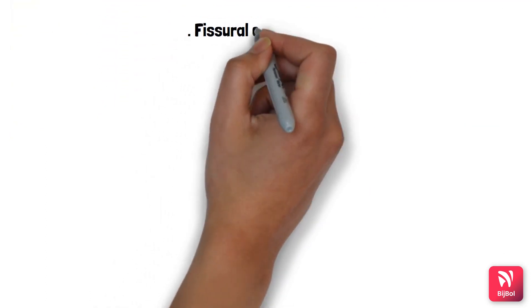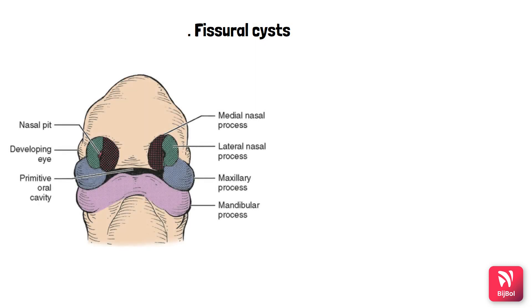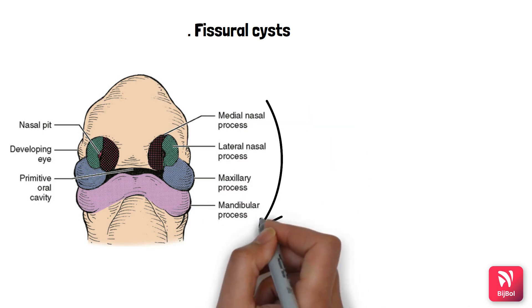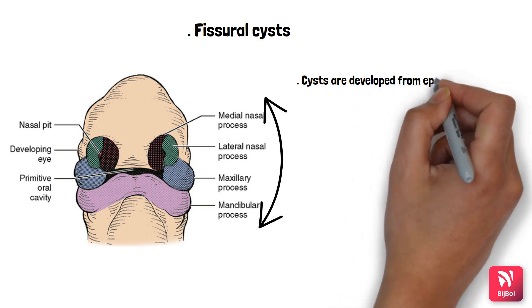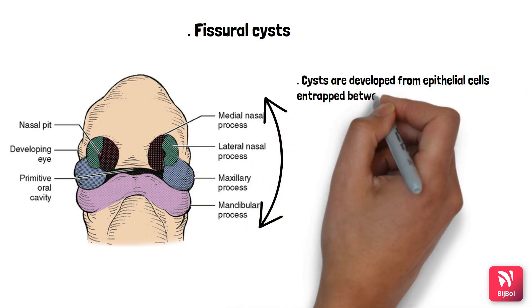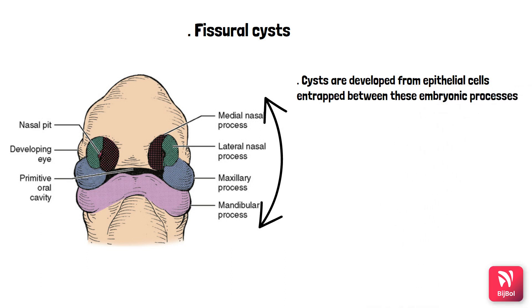These non-odontogenic cysts are also called fissural cysts. This picture of an embryo shows the development of the face from processes: the medial nasal process, lateral nasal process, maxillary process, and mandibular processes, which are fusing together. Whenever there is a fusion of these embryonal processes, a few remnants will always remain. These fissural cysts are derived from epithelial cells entrapped between the embryonic processes of bones at union lines.